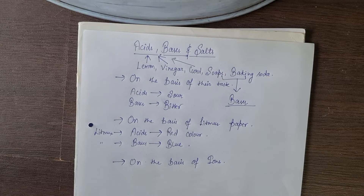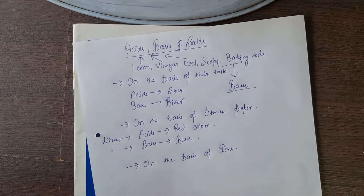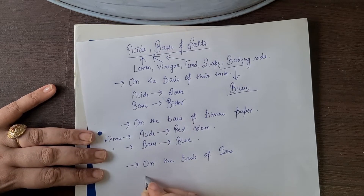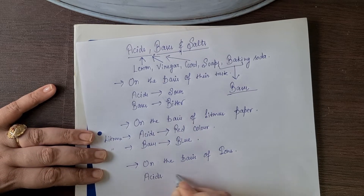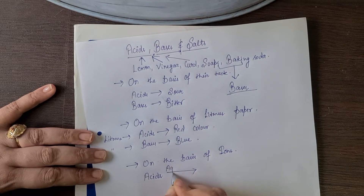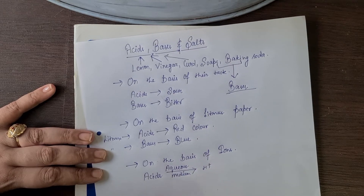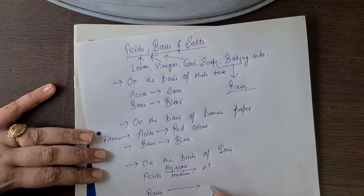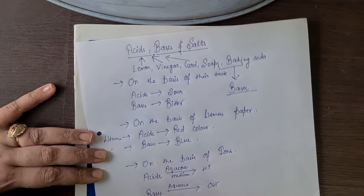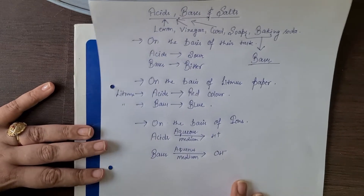The third classification of substances is on the basis of ions. Ions are of two types: cations and anions, which we will discuss later. All acids, when in aqueous medium — aqueous means water — give H positive ions, and all bases give OH negative ions when in aqueous medium.